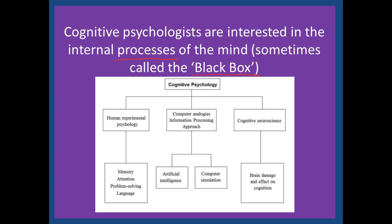And then we come to the computer analogy. An analogy is like a metaphor or a simile. In this case, it's comparing the way the brain processes information to the way a computer processes information. This enriches artificial intelligence, as they try and design systems that mimic the brain learning. It also enriches psychology, as psychologists look and see how computers learn.